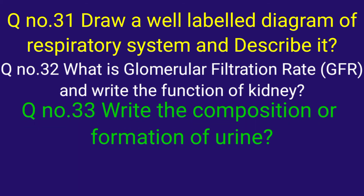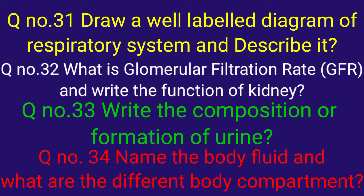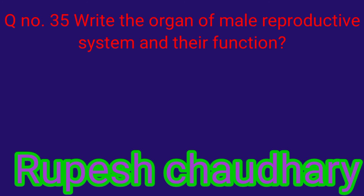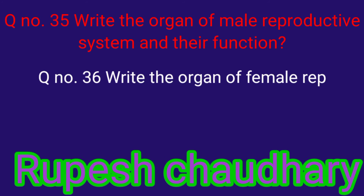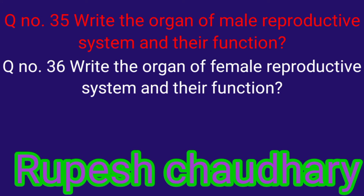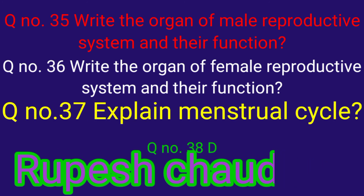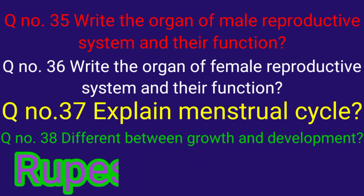Question number thirty-three: write the composition and formation of urine. Question number thirty-four: name the body fluids and describe the different body compartments. Question number thirty-five and thirty-six: write the organs of the female reproductive system and their function. Question number thirty-seven: explain the menstrual cycle. Question number thirty-eight: differentiate between growth and development.